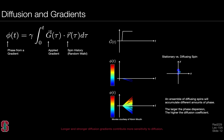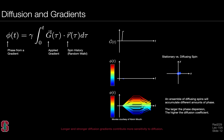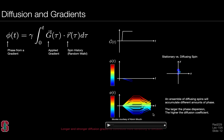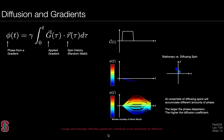Considering an ensemble of diffusing spins — dozens, hundreds, or even millions — each spin accumulates a different amount of phase because each has visited a different position history during the measurement interval. Larger phase dispersion at the end of the diffusion encoding gradients is indicative of a higher diffusion coefficient, and greater phase dispersion leads to greater signal attenuation. In general, longer and stronger diffusion gradients contribute more sensitivity to diffusion, which we will design for in the next lecture.